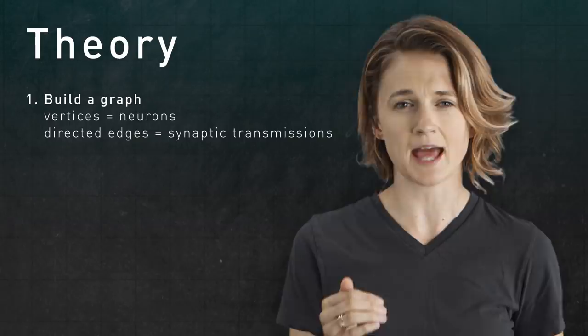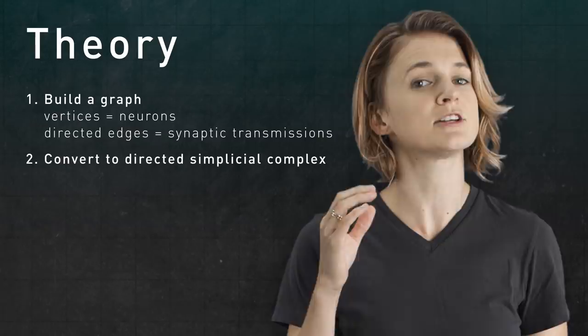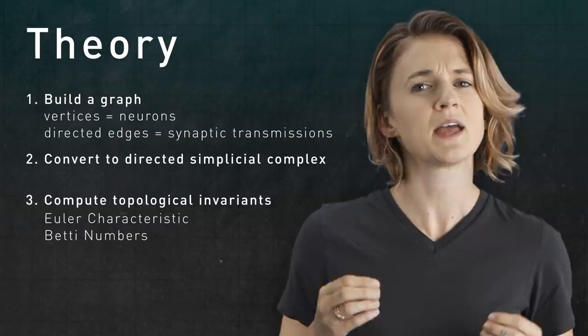We're really honing in on configurations of neurons through which information is flowing, not just vibrating around randomly. We now have a theory about how to analyze a system of neurons. Build a graph where the vertices represent neurons and the directed edges represent synaptic transmission, convert that graph into a directed simplicial complex, and compute the topological invariants, like Euler characteristic and Betty numbers. Now it's time for the next step in the scientific method. Test the theory.